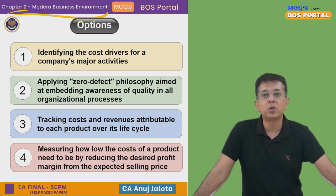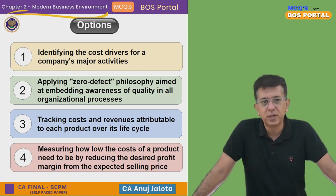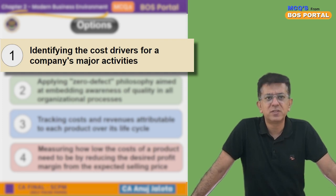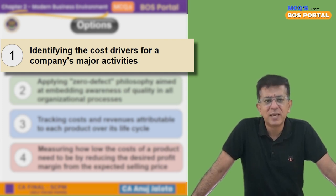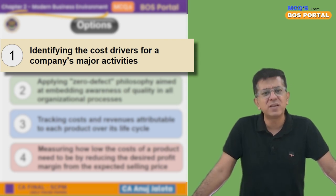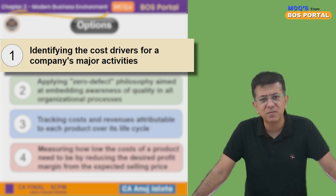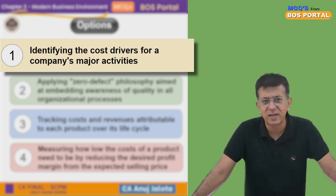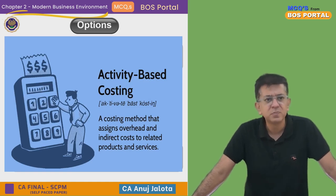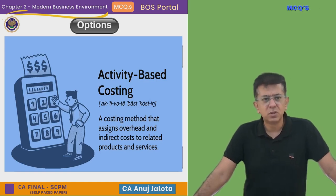Which one describes Total Quality Management? For option one — identifying cost drivers for a company's major activities — we are not talking of total quality here; you are identifying cost drivers. This is Activity Based Costing, which you have done before.